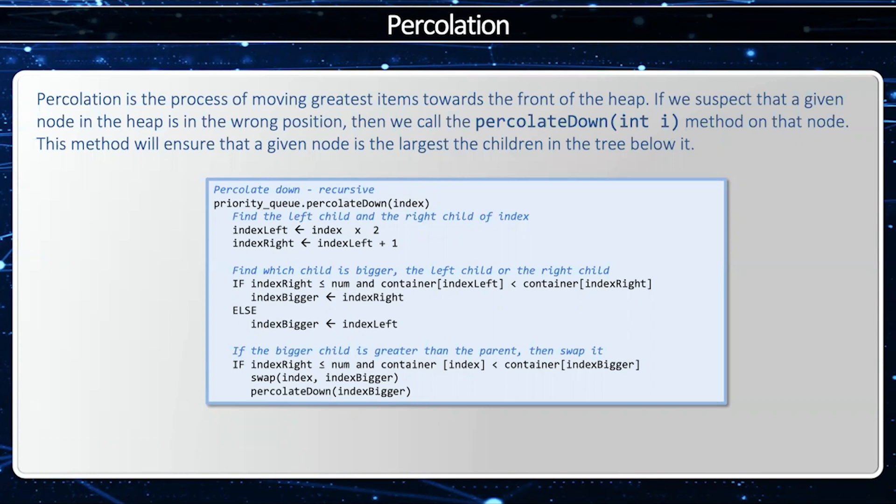Now, if the element to the left is greater than the parent or the element to the right is greater than the parent, we want to remember that with our index bigger variable. And then what we're going to do is we're going to swap that element with the parent and then call percolate down on whichever the two is bigger. Let's find out how that works.